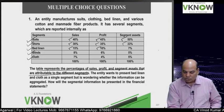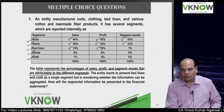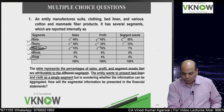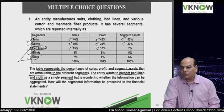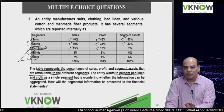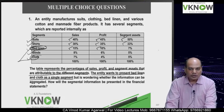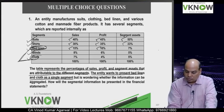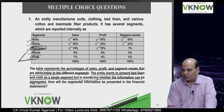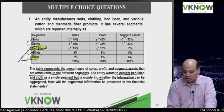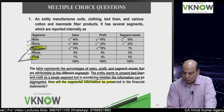The table represents the percentage of sale, profit, and assets attributable to the different segments. The entity wants to present bad linen and cloth as a single segment because their economic characteristics are the same - same type of customer, same type of product or service, same distribution network, same regulatory environment. Can they combine these two as one? The question is whether information can be aggregated.